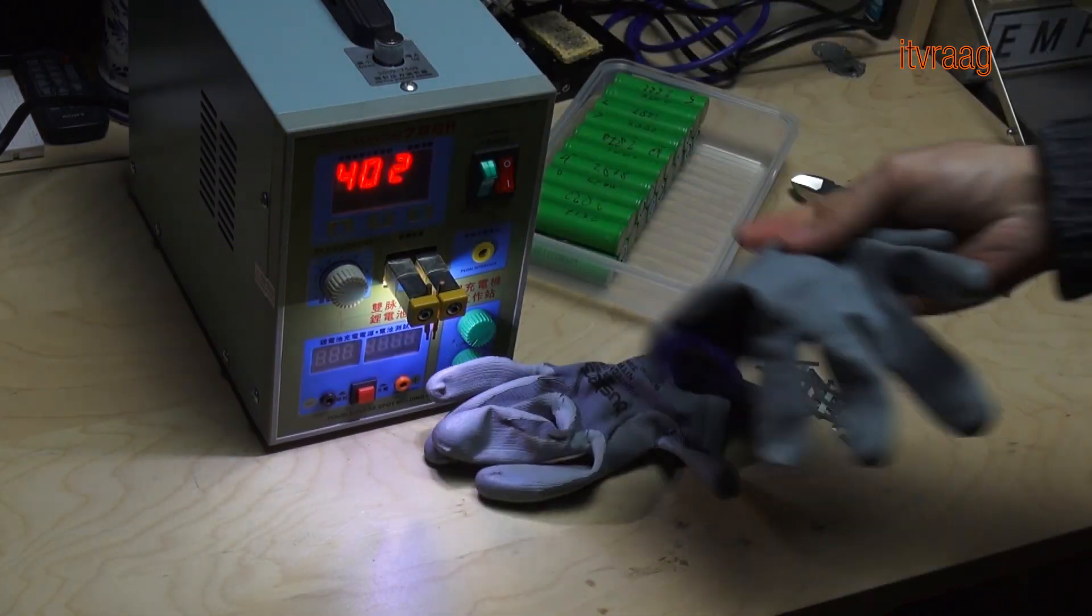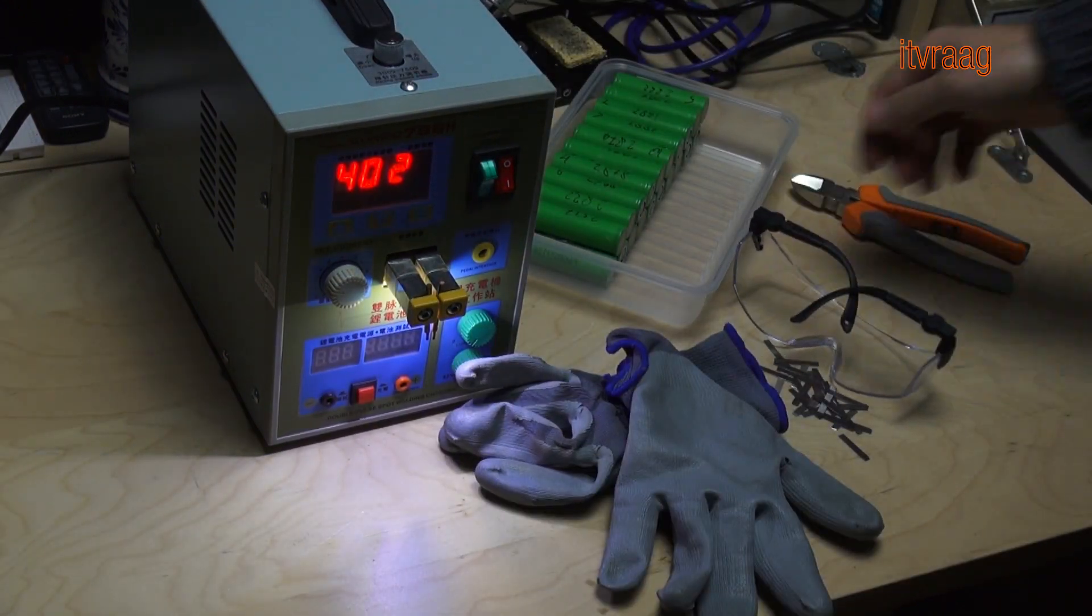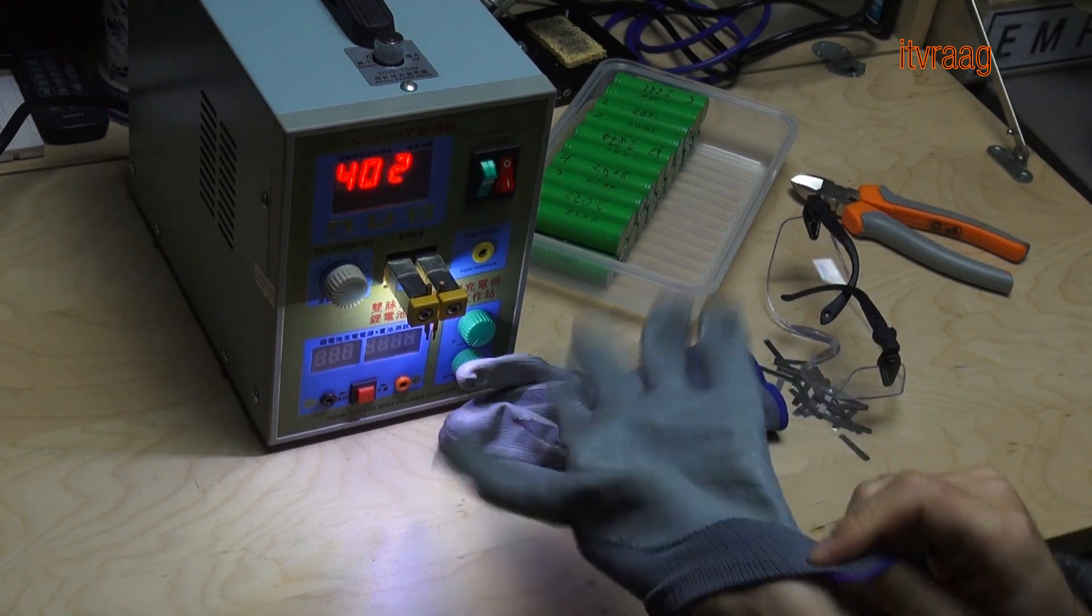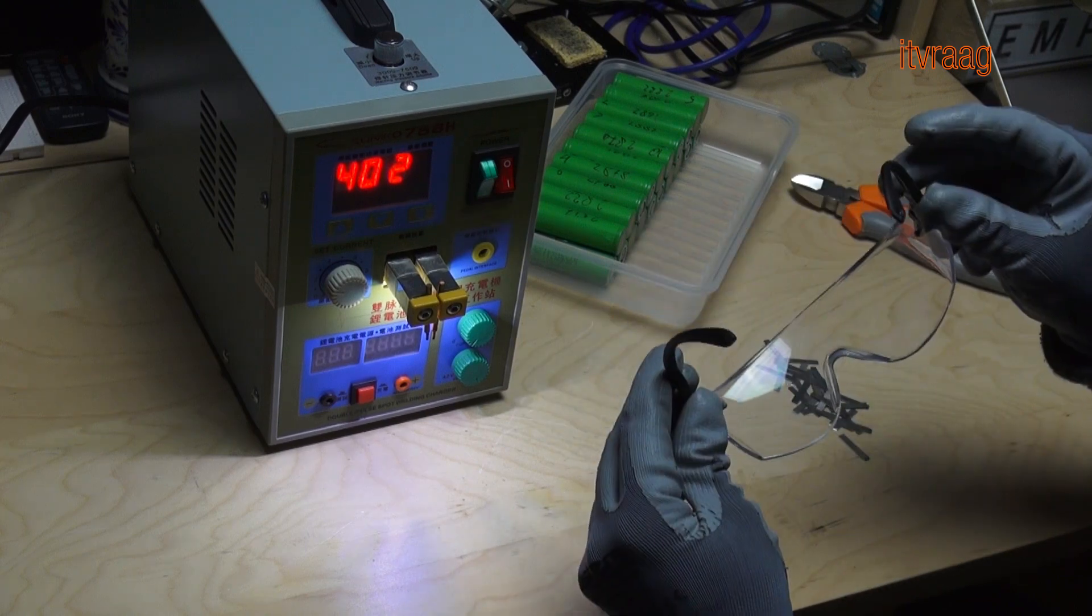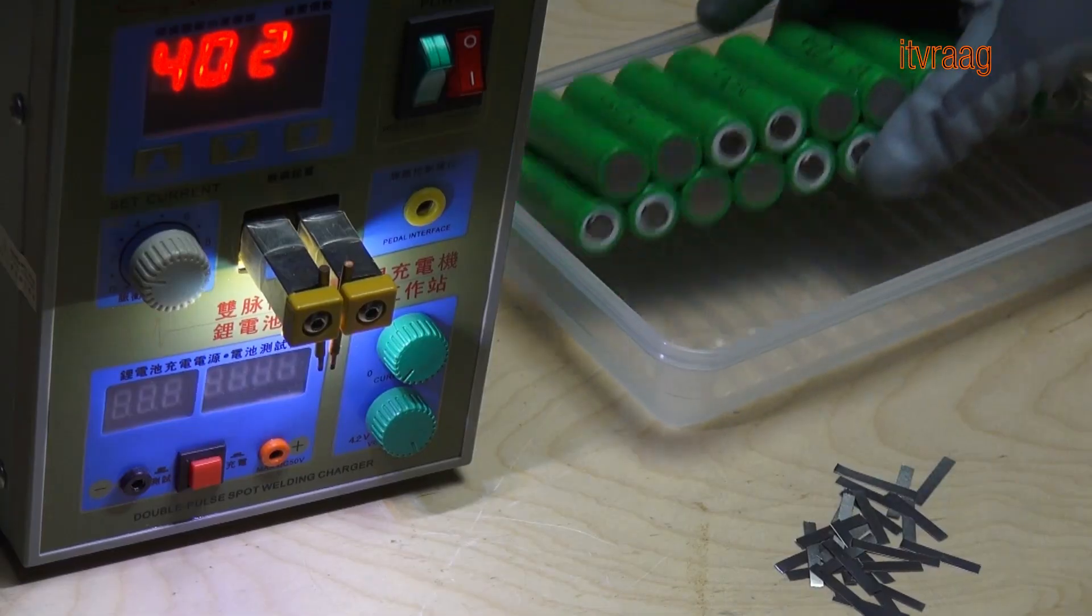Next I connected the cells using a spot welder and a nickel strip. Depending on your purpose, the nickel strip you use here should best be thick and broad in order to handle the high current, otherwise it could melt.